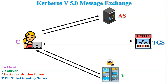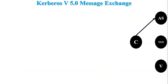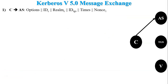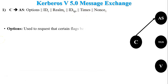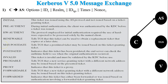Now let's discuss Kerberos version 5 message exchange in detail, step by step. In the first step, the client sends a request to the authentication server. In that request message, there are six different values. The first one is options, which is used to request that certain flags be set in the returned ticket — flags like initial, pre-authentication, hardware authentication, renewable, and many more.